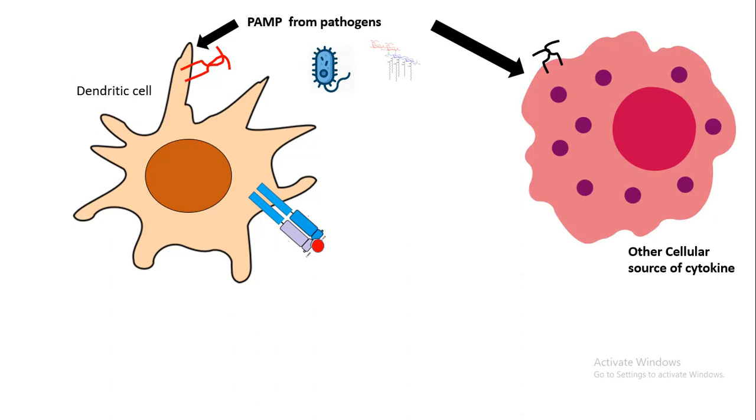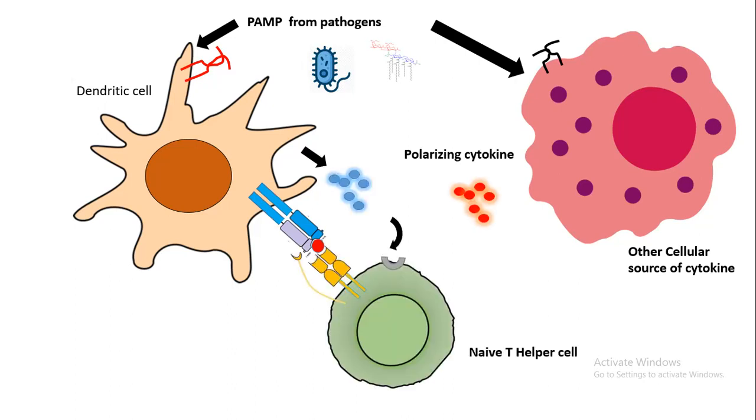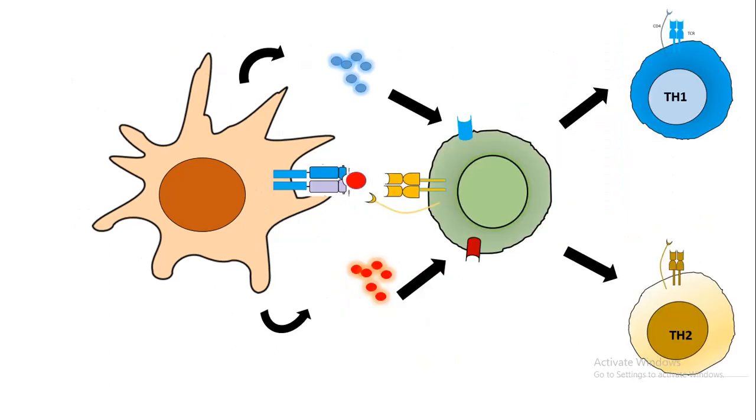Specifically, these dendritic cells, which are like a patrolling police officer, would go to the base camp in the lymph node and interact with the T-cell. Depending upon what type of polarizing cytokine they are secreting, this naive T helper cell would differentiate into several subcategories. In this picture, you can see that depending upon the polarizing cytokine, the naive CD4 positive helper T-cell can either differentiate into TH1 subcategory or TH2 subcategory.